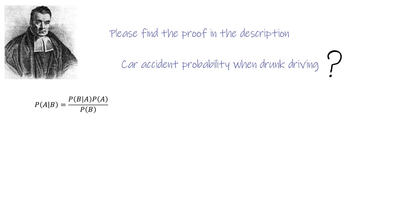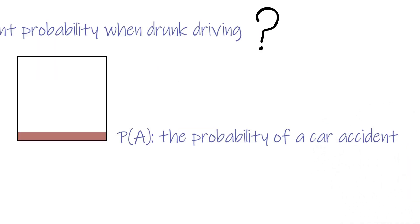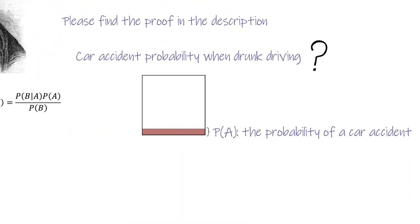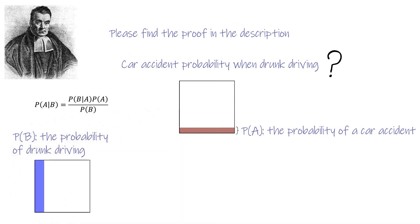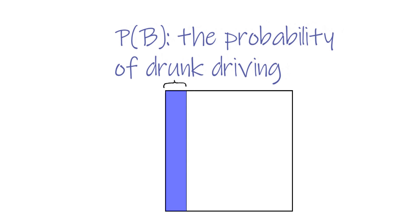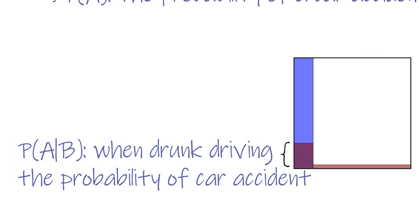Based on the formula, P(A) is the probability of car accident. P(B) is the probability of drunk driving. Now, let's put these two diagrams together. As we know, the probability of accidents should be higher when drunk driving. P(A|B) is when drunk driving the probability of car accident, which is the value we want to know.